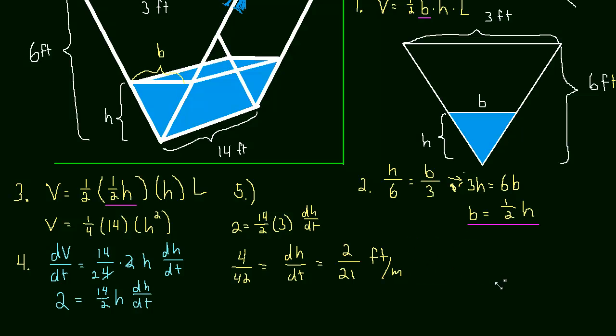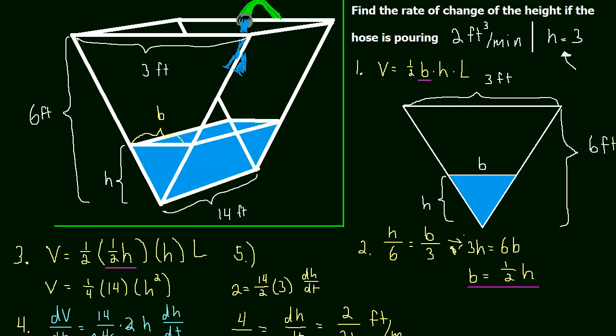Okay, so that's that problem. And the key to this whole problem, recapping, was to figure out the relationship between volume and height. And to do that, we had to figure out this similar triangle and make a substitution for b equals one-half h. Okay, see you in the next video.